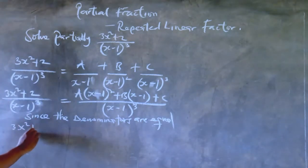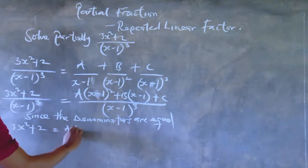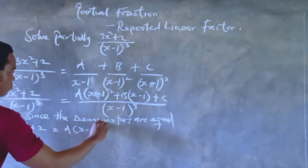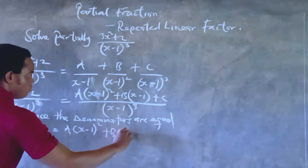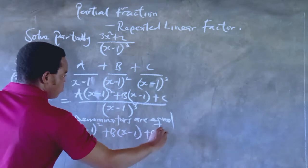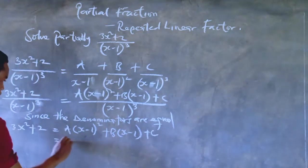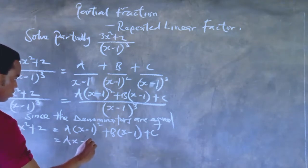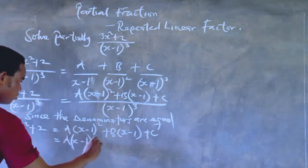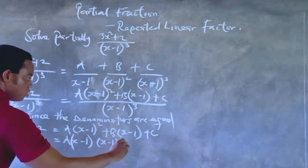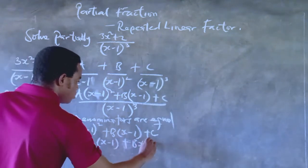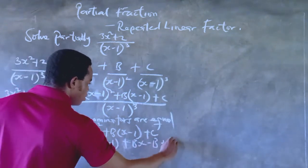So now we can go on, equate the numerator and focus on that. So we have 3x raised to power 2 plus 2 equals A into bracket (x minus 1) squared plus B into (x minus 1) and plus C. So let's open those brackets that we have there.